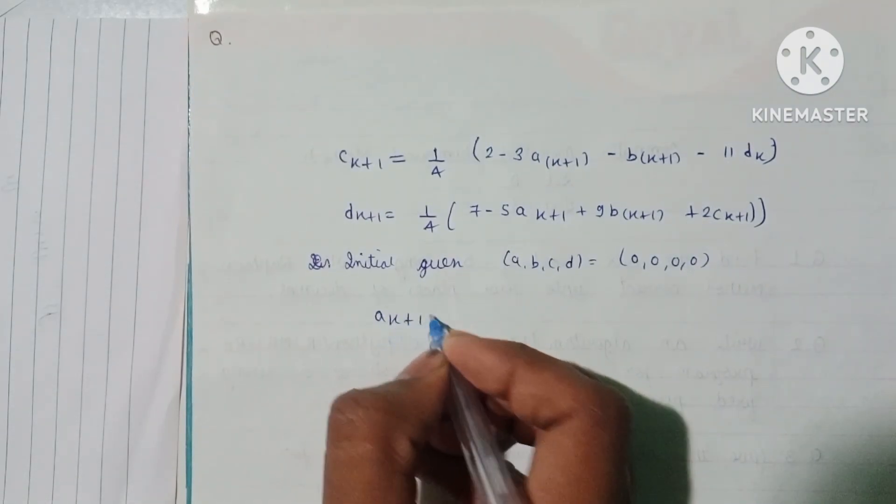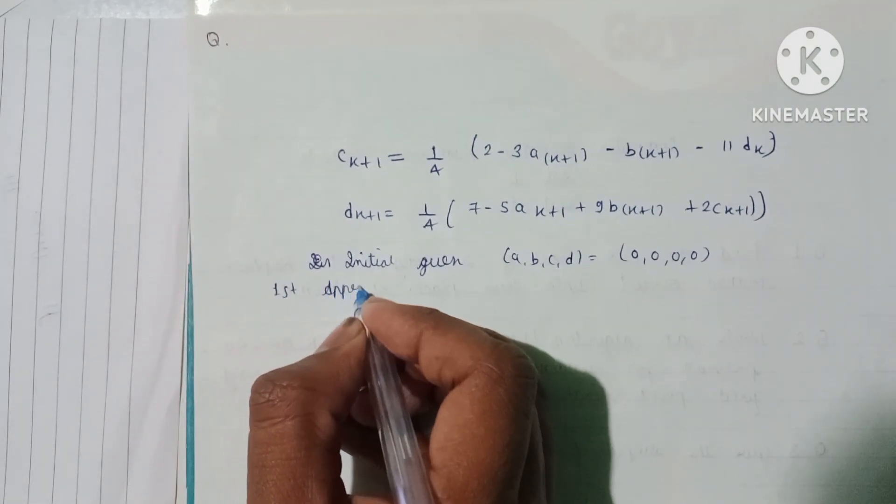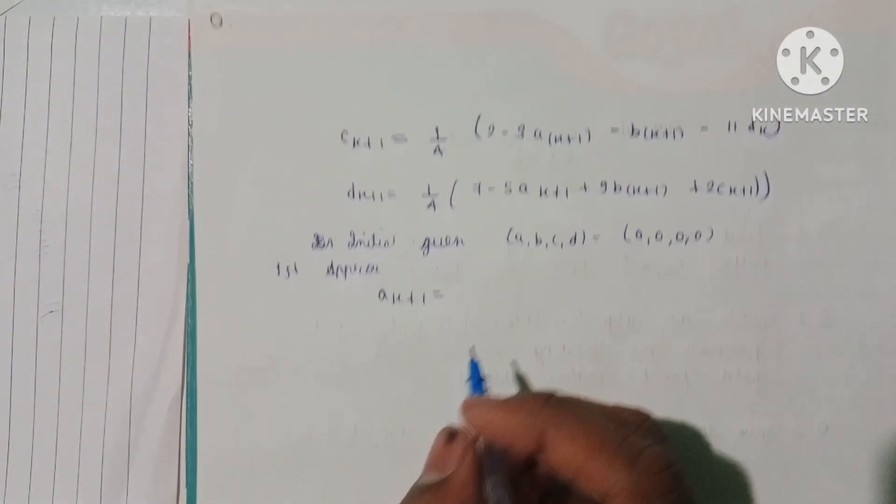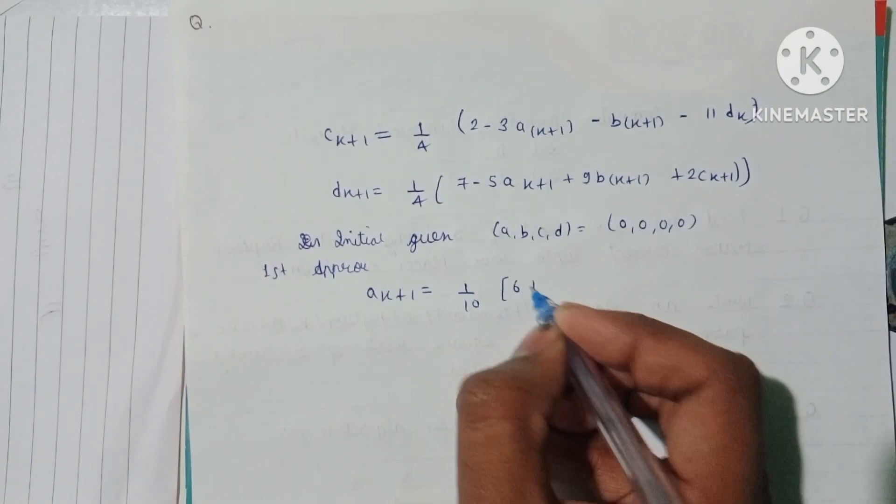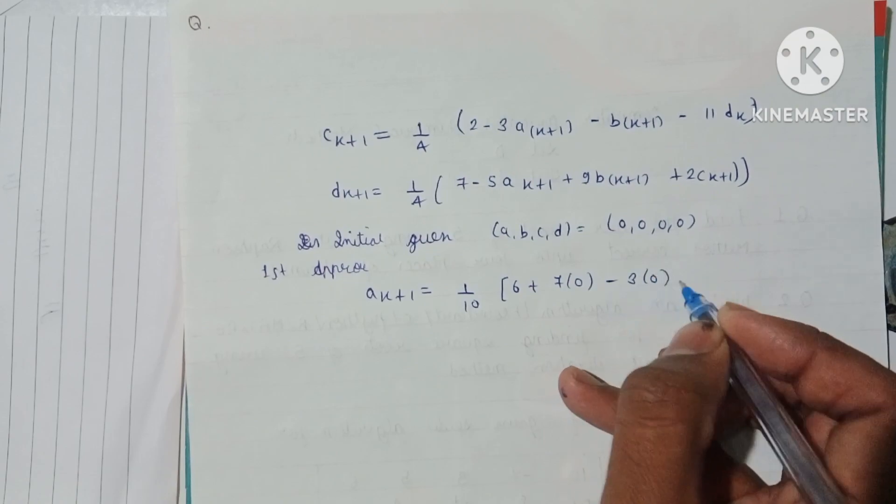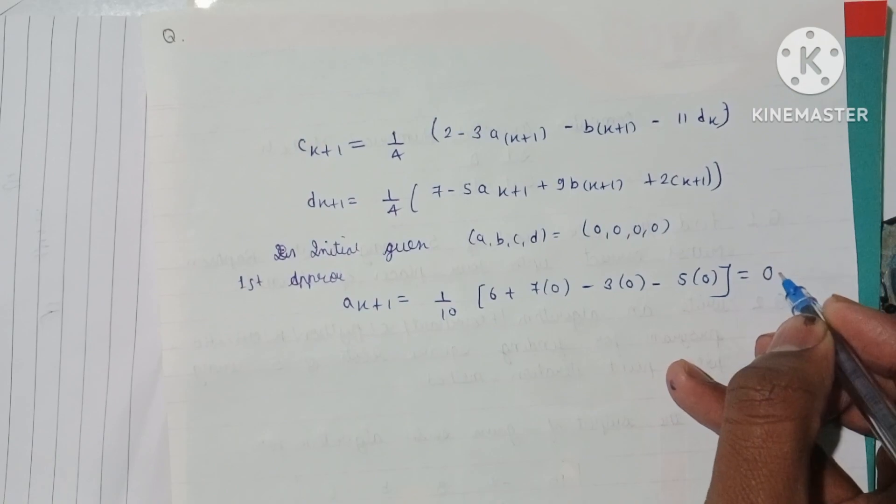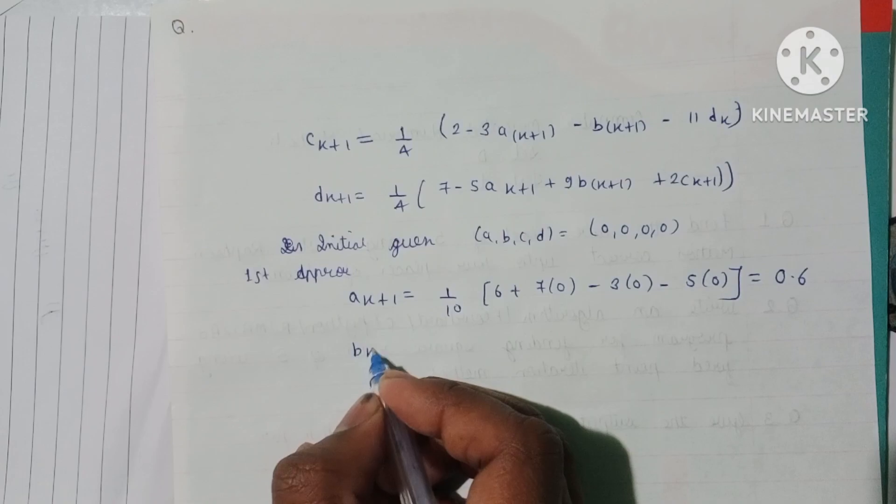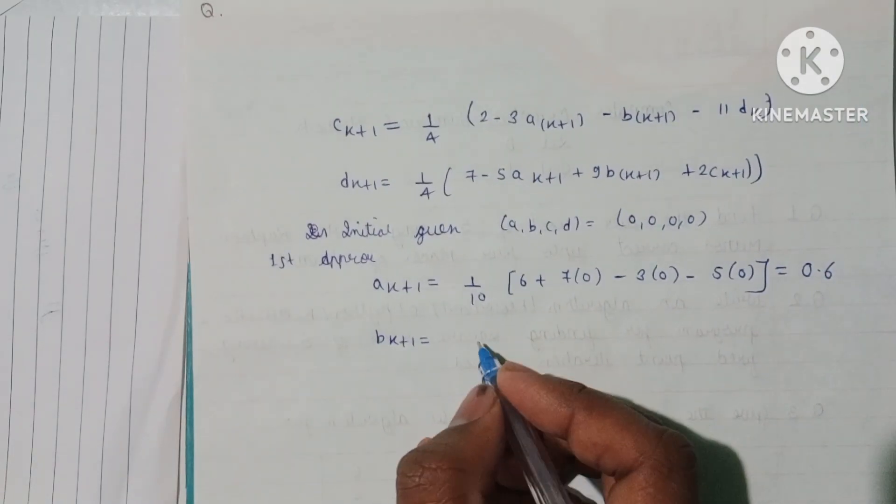Then A(k+1) for the first approximation will be 1/10 times (6 + 7 of 0 - 3 of 0 - 5 of 0), which equals 0.6.